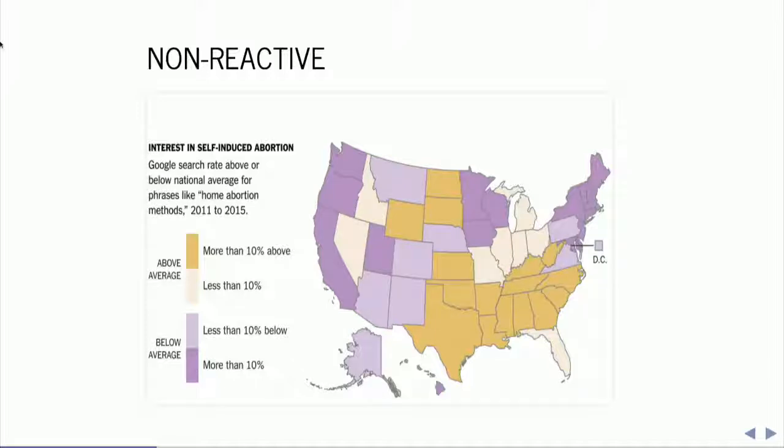Or similarly, in other work, I've used Google search data, which is pictured here. These are searches for self-induced abortion in the U.S. to track things like violent radicalization. So people who might become violent radicals might Google something like how to join ISIS, right? Not very intelligent people, of course, but these people would be unlikely to announce themselves as violent radicals before a survey researcher.